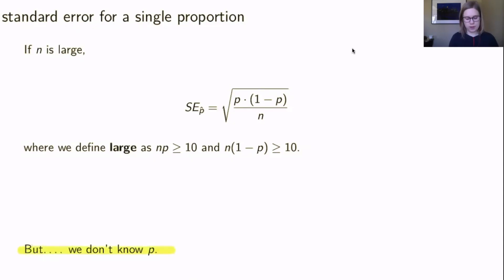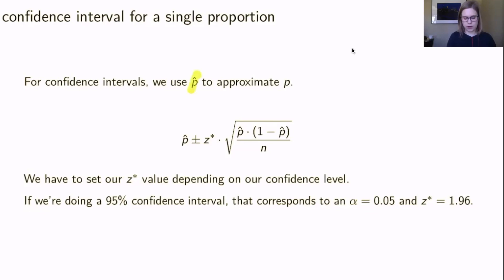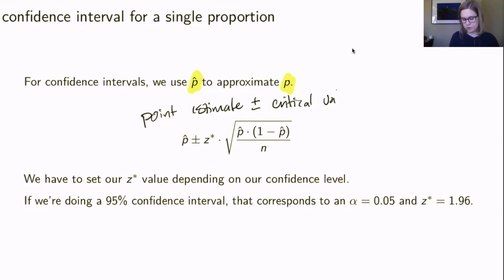Our problem is we don't know p — in the case of confidence intervals we're going to use p-hat to approximate p. When making a confidence interval, our generic task is to do the point estimate plus or minus some critical value times the standard error. In this case our point estimate is p-hat, our critical value comes from a normal distribution, and our standard error is approximated by the square root of p-hat times 1 minus p-hat over n.